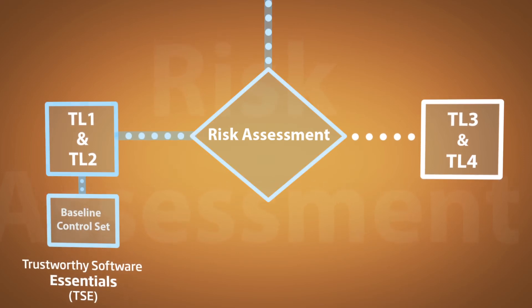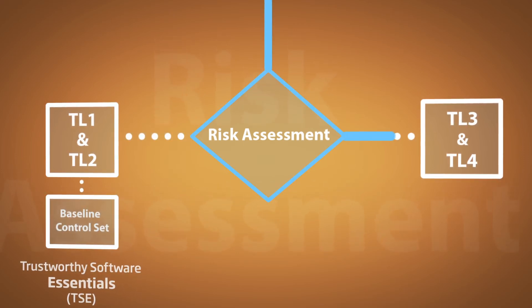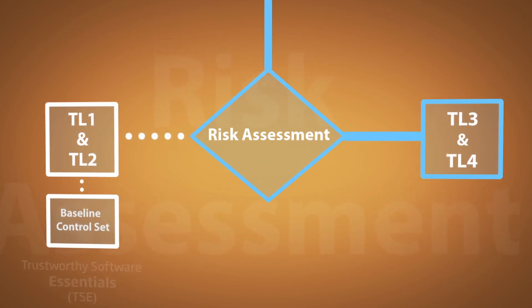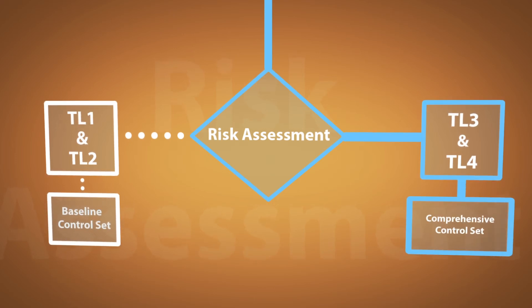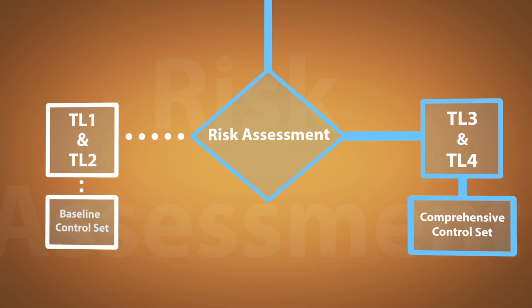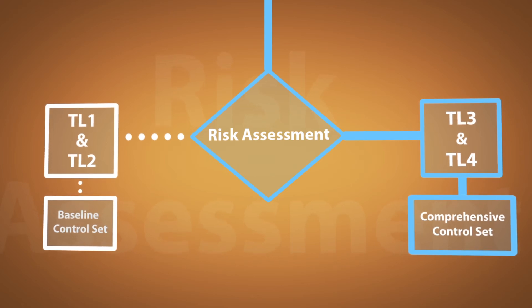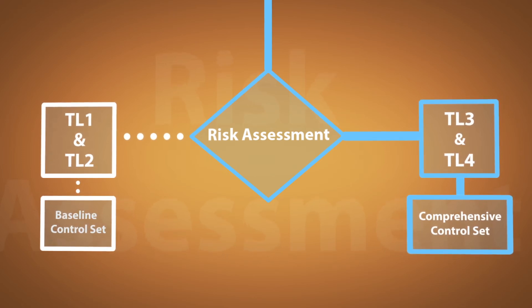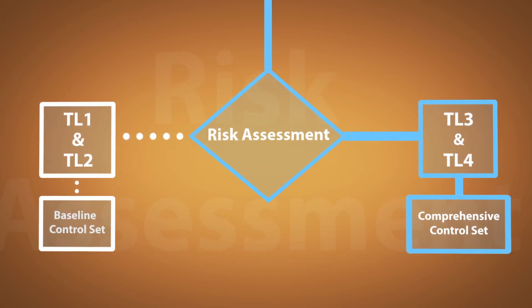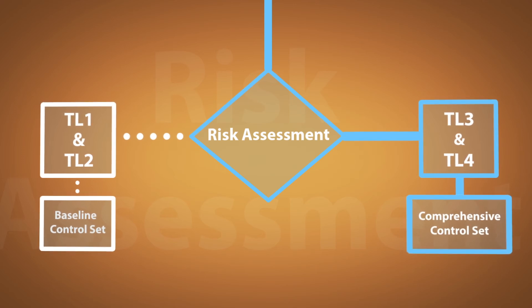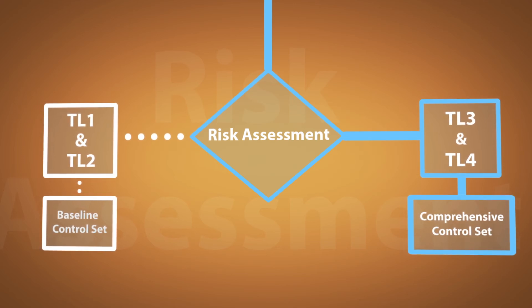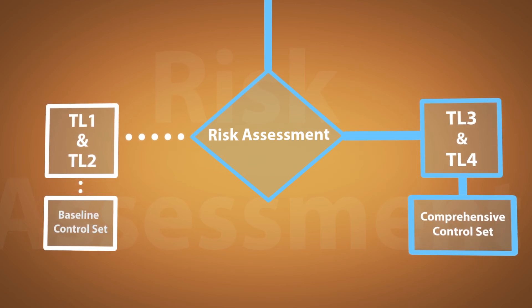The higher trustworthiness levels, TL3 and TL4, require the application of a larger number of controls to achieve sufficient levels of trustworthiness. These are contained within the comprehensive control set. More information about its application for TL3 and TL4 can be found in the comprehensive control set video.